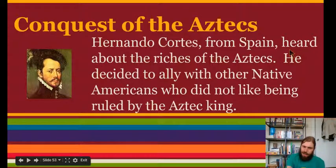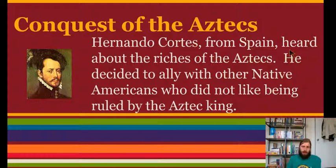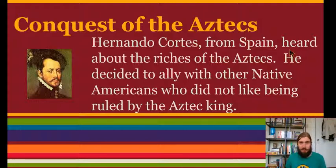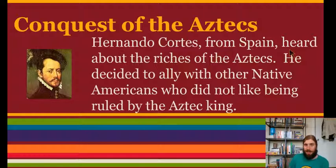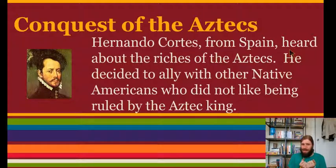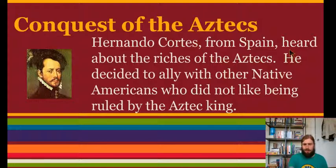What happened to the Aztecs? The Aztecs were conquered by Spain. Conquered means they were attacked, taken over, and defeated. Hernando Cortes from Spain heard about the riches of the Aztecs and decided to ally with other Native Americans who did not like being ruled by the Aztec king. Together, they were able to defeat the Aztecs, destroyed the Aztec capital, and built Mexico City on top of it — which is still there today.